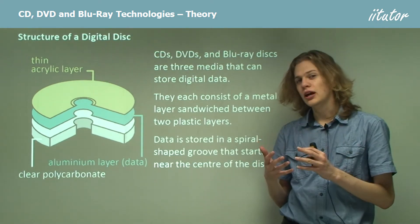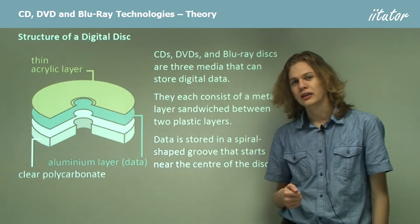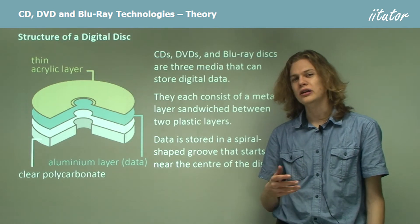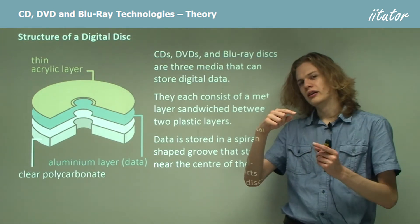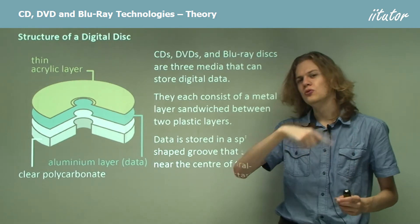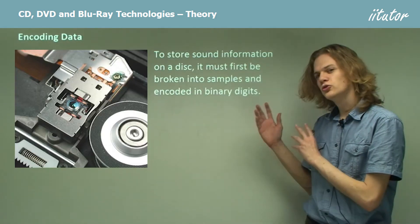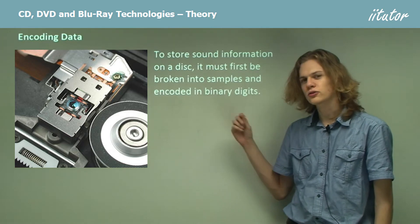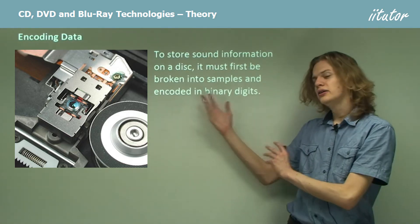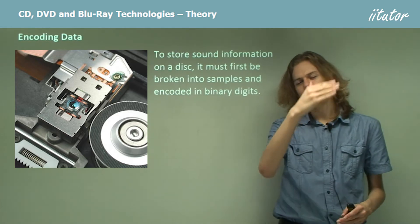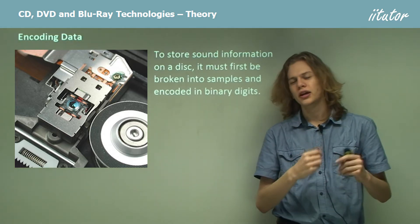The shape of the data that we store is a spiral-shaped groove, a little bit like the old LP vinyl records. So we store the data in a spiral that starts in the middle and moves outwards through the disk. To store sound information on a disk we first have to digitize it — we break it into samples, assign a number to each sample, and then convert that number into binary.